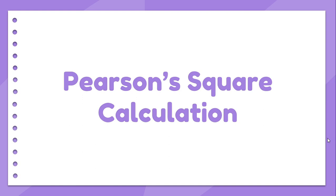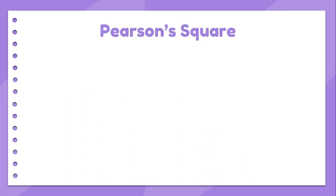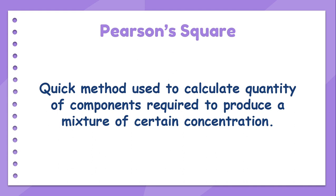Welcome to the Food Science Peeps channel. In this video we are going to learn how to use Pearson Square calculation to determine the quantity of each component needed to produce a mixture with a certain concentration. Pearson Square is a quick method that can be used to calculate the quantity of components required to produce a mixture of certain concentration.